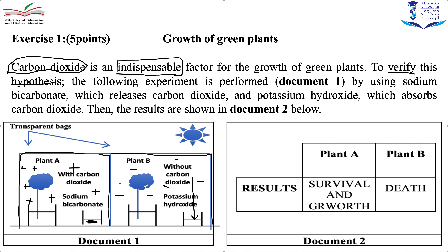The water quantity, type of plant, and mineral salts are all the same. The only difference is carbon dioxide: in experiment A it is present — the air is rich in carbon dioxide due to the sodium bicarbonate — while in experiment B it is absent because potassium hydroxide absorbs the carbon dioxide from the air. Be careful about this variable factor.